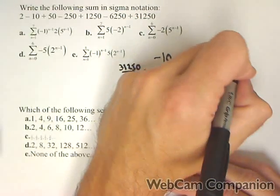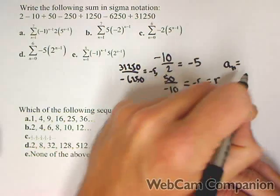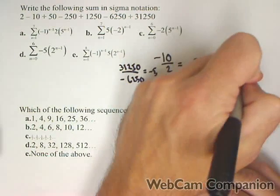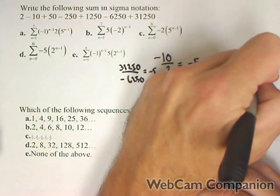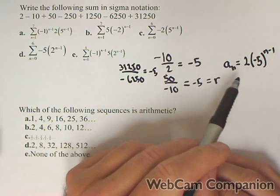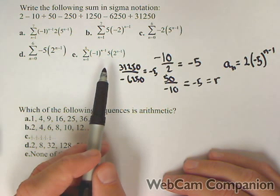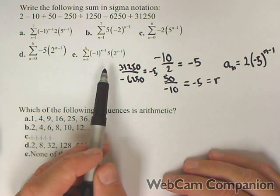So I can find the general term a sub n by just plugging in my first term, 2 times negative 5 to the n minus 1. Alright, the reason I wanted my general term is I can use this now to figure out what this thing should look like in summation notation.